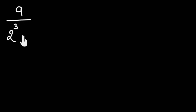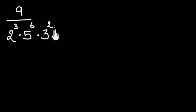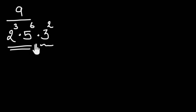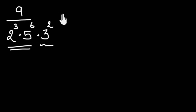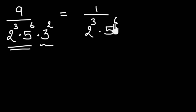Let's see the last case — when we have any other factor other than 2s and 5s. Let's say we have 9 divided by 2 cubed times 5 to the power 6 times 3 squared. At first glance, we'd say we have an extra factor other than 2s and 5s, so the decimal expansion should be non-terminating and recurring. But we always look for the simplest form. If we divide both numerator and denominator by 9, this becomes 1 upon 2 cubed times 5 to the power 6. Now we only have 2s and 5s in the denominator, which we can convert into powers of 10, so this would be terminating.